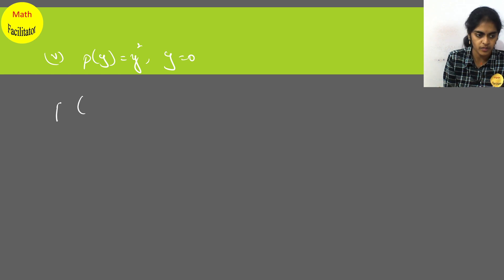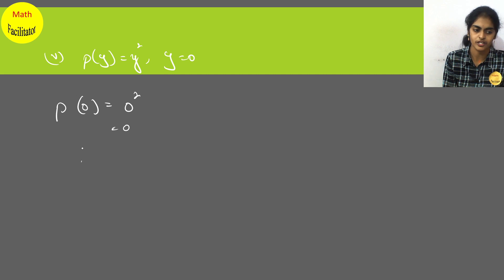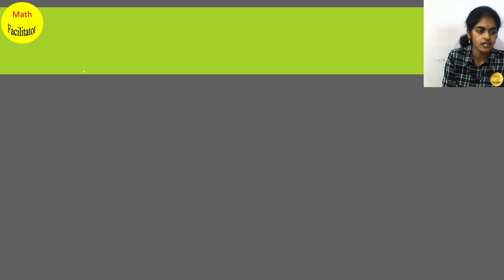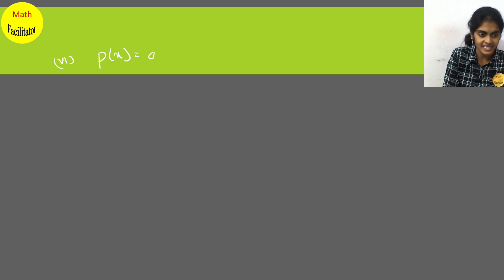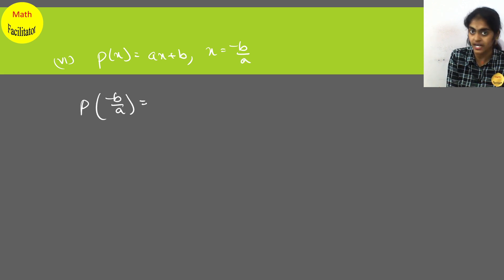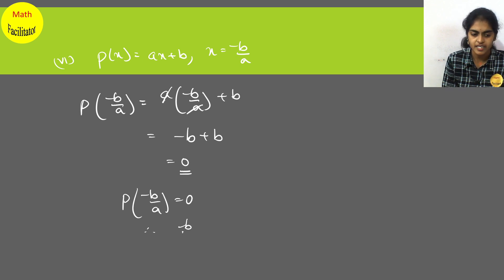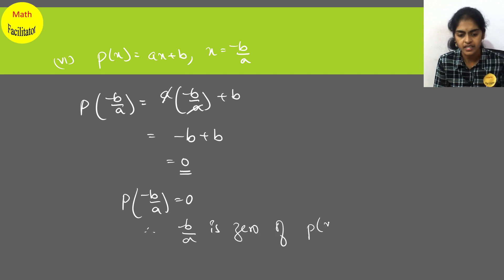For p(y) = y², substituting y = 0 gives 0² = 0. So 0 is a zero of the polynomial. For p(x) = ax plus b with x = −b/a: substituting gives a into (−b/a) plus b. The a cancels, leaving −b plus b equals 0. Therefore −b/a is a zero of the polynomial p(x).